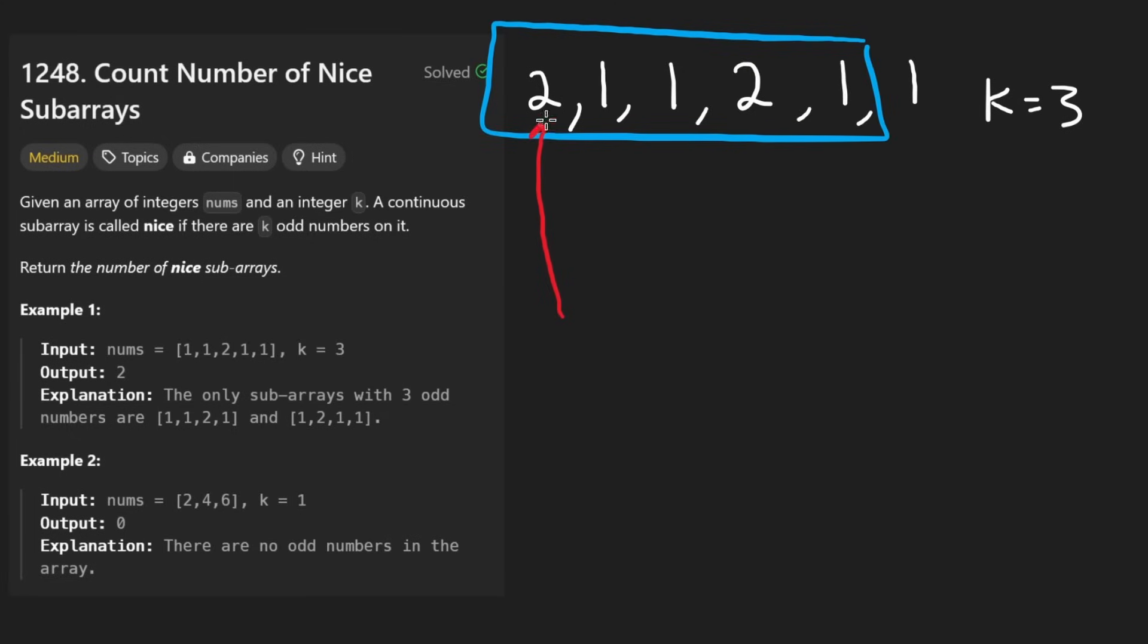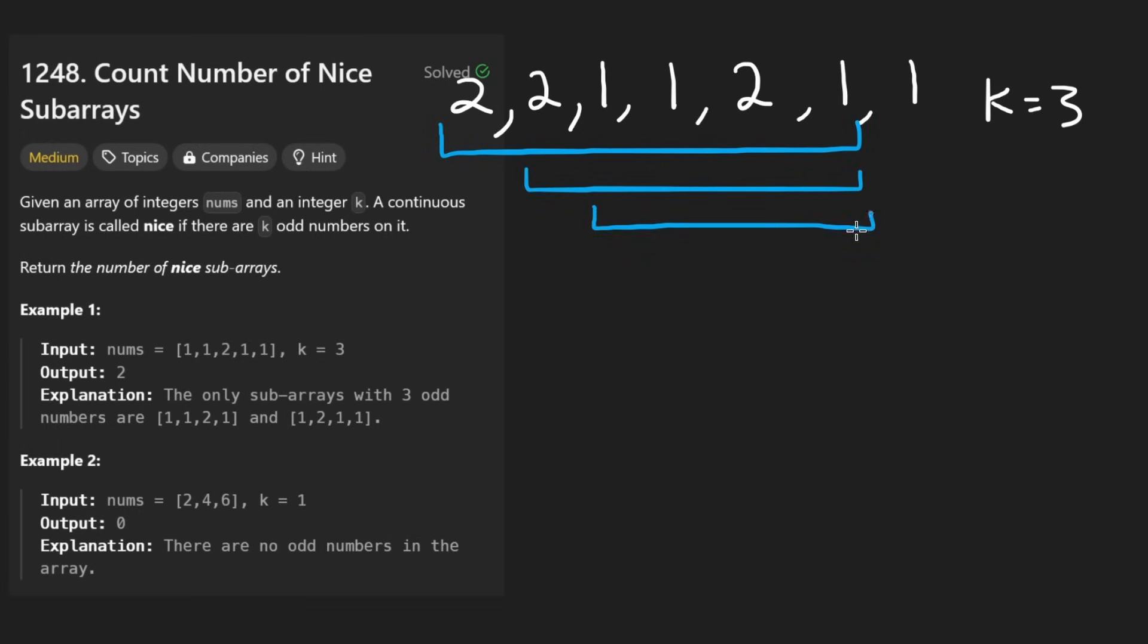There could be some preceding values that are not odd, right? So in that case, we'd want to count this as a subarray and this as a subarray. And it could be that there's actually multiple twos. In this case, we'd want to count this subarray, this subarray, and this subarray.